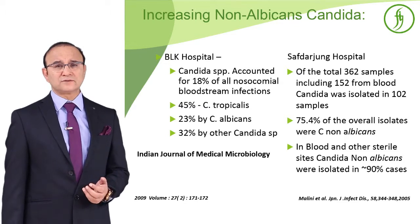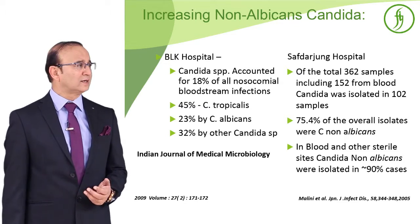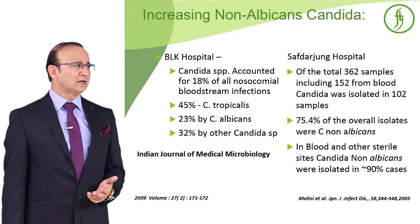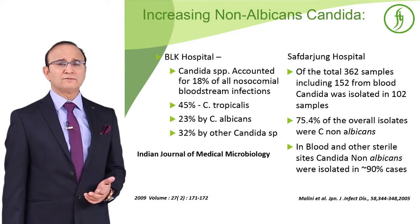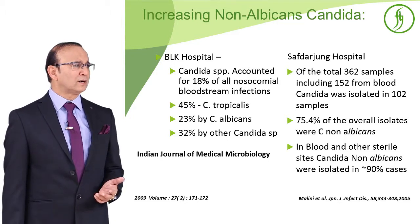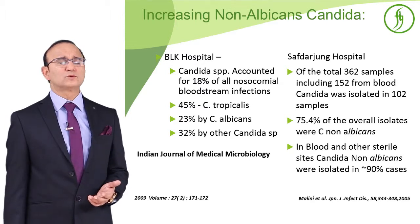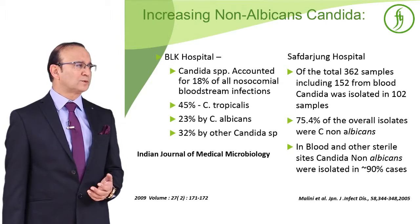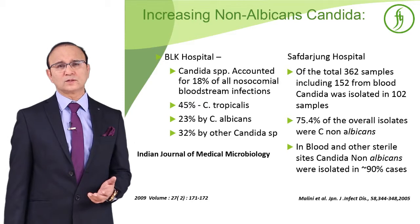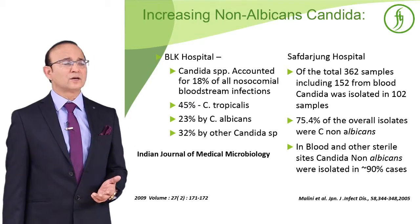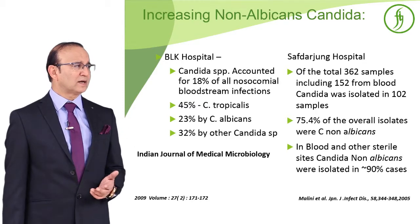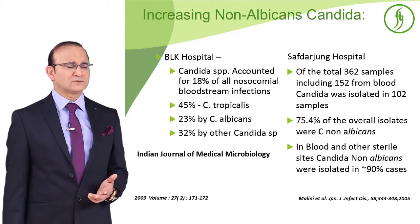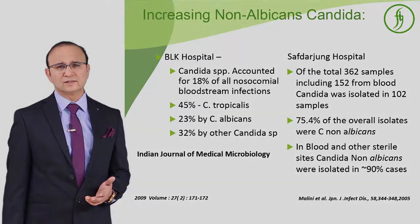Similarly, another study from Sabtajang hospital in Delhi found a total of 362 samples, including 152 from blood. Candida was isolated in 102 samples, and 75.4 percent of overall isolates were Candida non-albicans. In blood and other sterile sites, Candida non-albicans were isolated in 90 percent of cases.